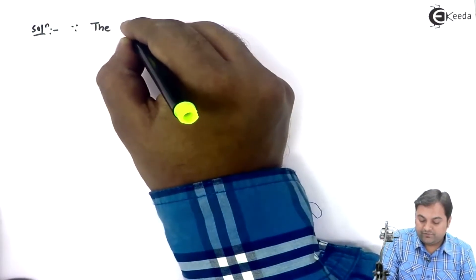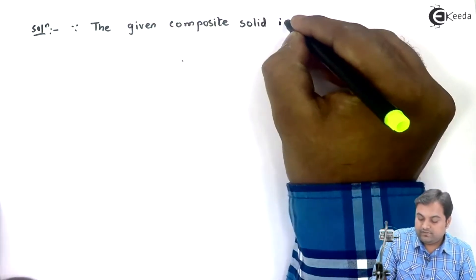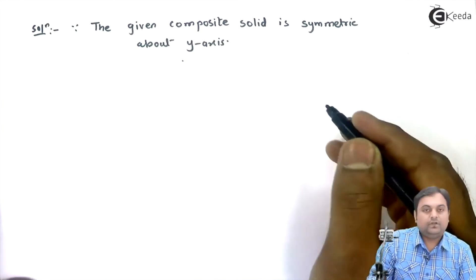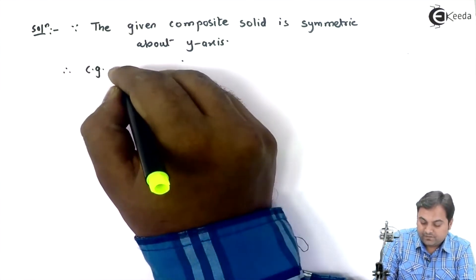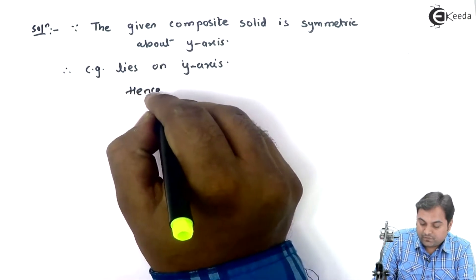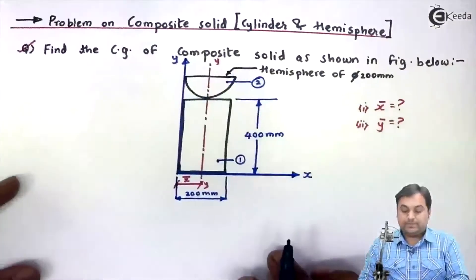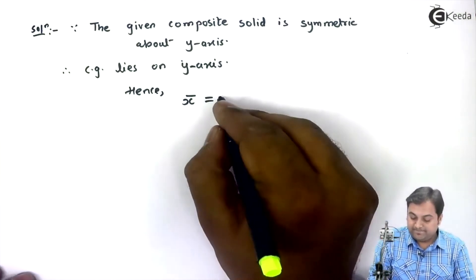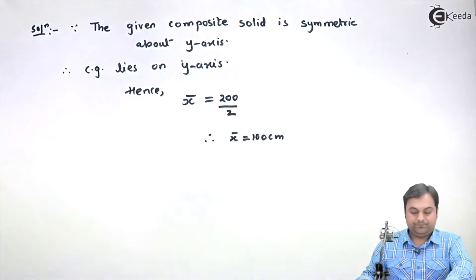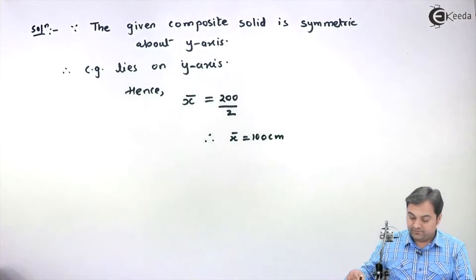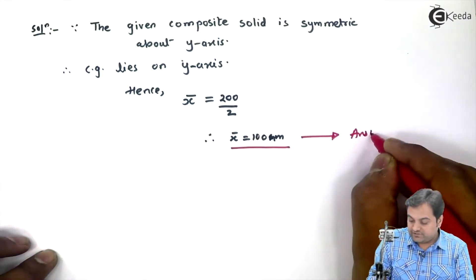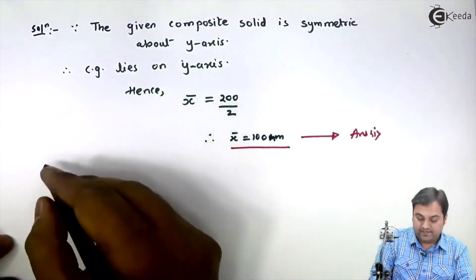Since the given composite solid is symmetric about the Y-axis, the CG lies on the Y-axis. Therefore X-bar can be taken directly as half of 200, so X-bar equals 200 divided by 2, which gives X-bar equal to 100 mm. This is our first answer.